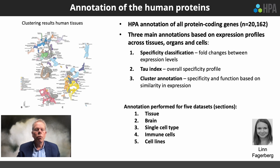We also have a new cluster annotation which gives the specificity and some indications of function based on similarity of expression. We are annotating all the genes based on five datasets: tissue, brain, single cell type, immune cells, and cell lines.